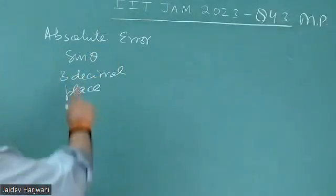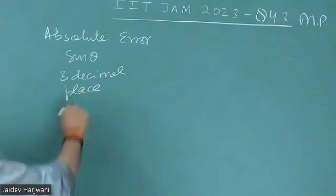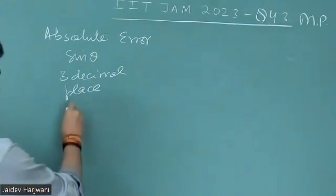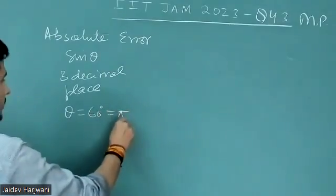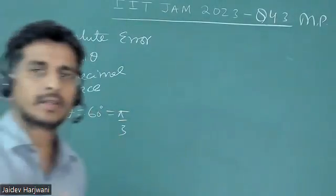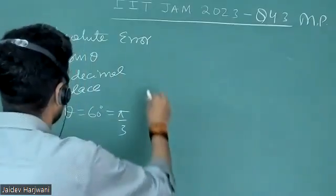This question asks about the absolute error in sine theta up to three decimal places for theta equal to 60 degrees, that is pi by 3. For three decimal places, I will take the Taylor series approximation.